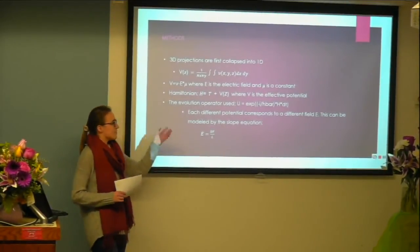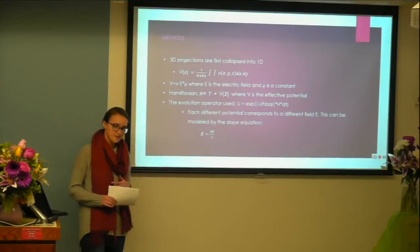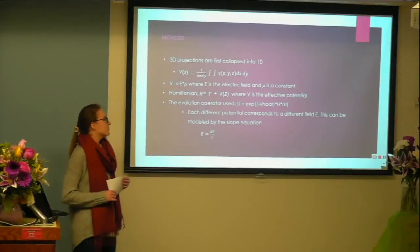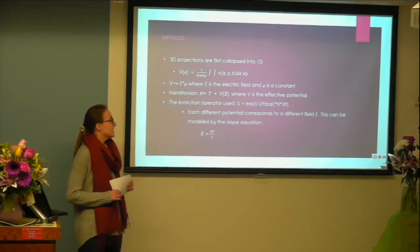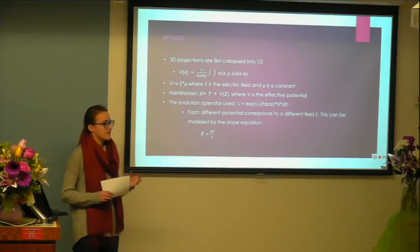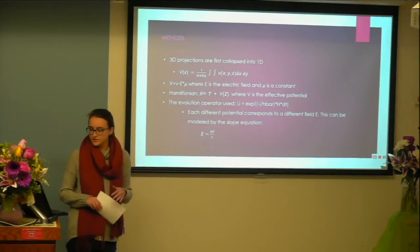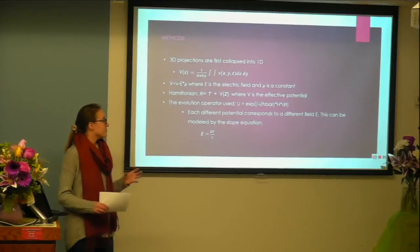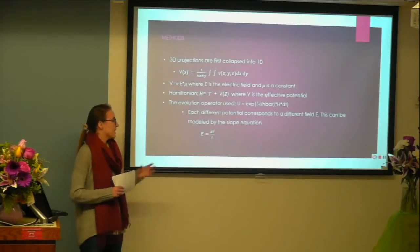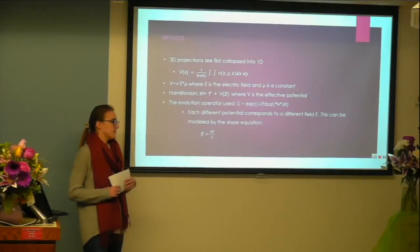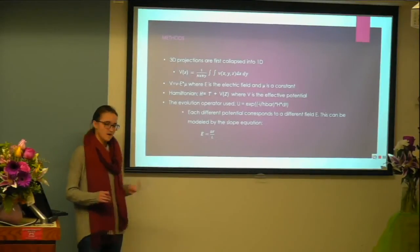That's because our evolution operator is dependent on the Hamiltonian, which is dependent on the potential. So I just have a further explanation to outline or identify that each different potential is going to correspond to a different electric field, which is just important to note. And you'll notice that in the plots, we do see a direct relationship between our change in potential and our electric field.